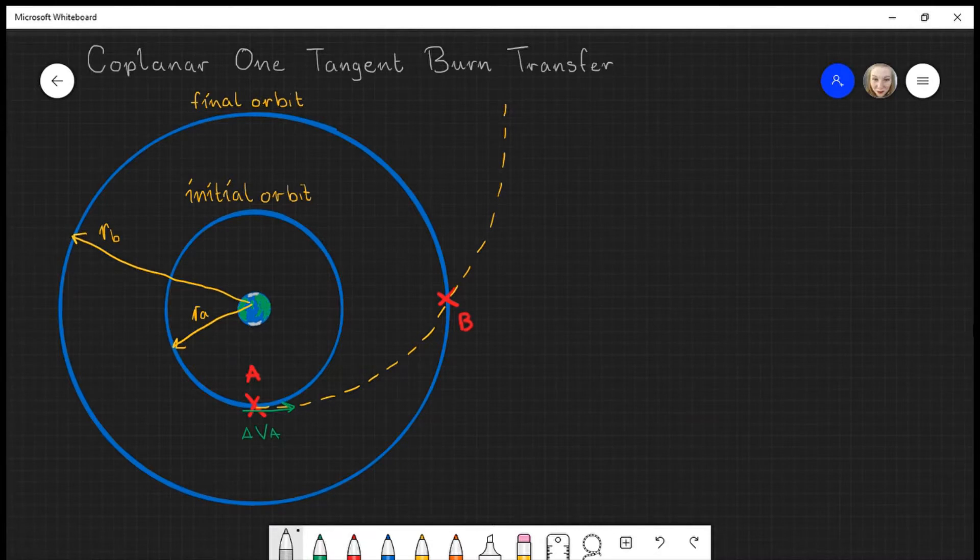The way that we calculate delta V_B is like this. This line is the tangent to the final orbit or circle. This line is the tangent to the transfer ellipse.